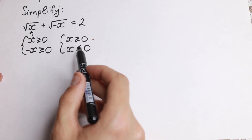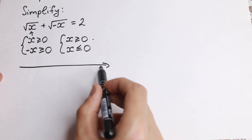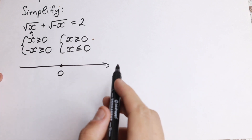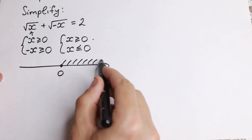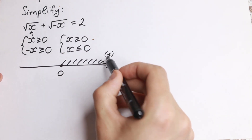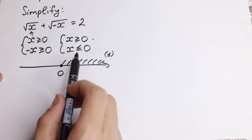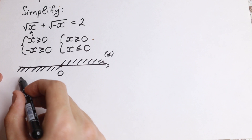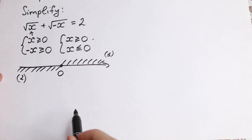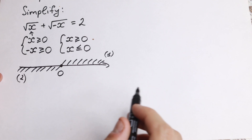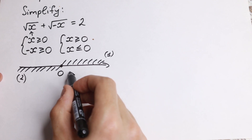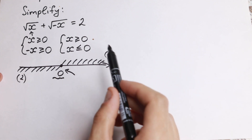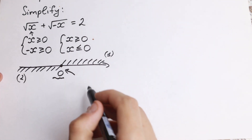So I'm going to find all values satisfying this system. The first inequality, x ≥ 0, goes to plus infinity. The second inequality, x ≤ 0, goes to minus infinity. The one common point of intersection of these two inequalities is zero. So the one and only candidate is x = 0.